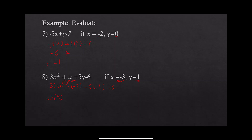Positive times negative gives negative. 5 times 1 gives 5, then minus 6. 3 times 9 is 27. Then: 27 minus 3 is 24, plus 5 is 29, minus 6 equals 23.